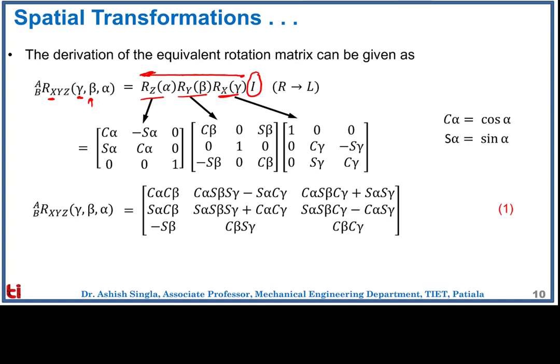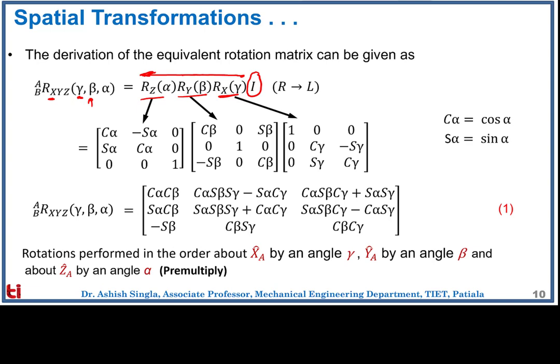The resulting rotation matrix is defined by only three variables: alpha, beta, and gamma. All nine entries of the matrix are dependent on these three numbers, so we need not specify all nine entries separately. The rotation sequence is: about X_A by angle gamma, Y_A by angle beta, and Z_A by angle alpha. These are pre-multiplications because each subsequent rotation about the fixed frame is multiplied on the left-hand side.